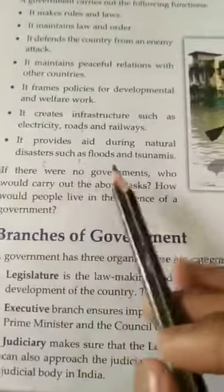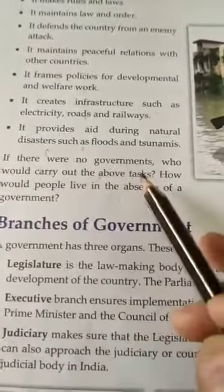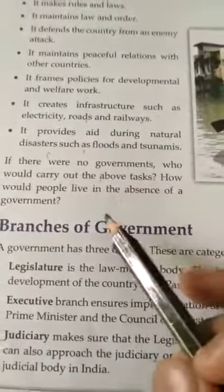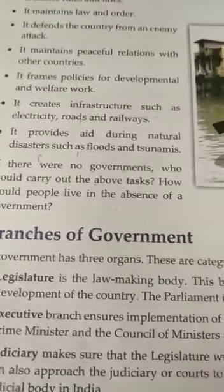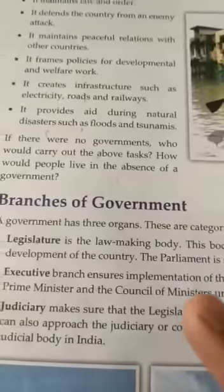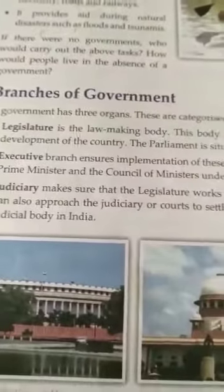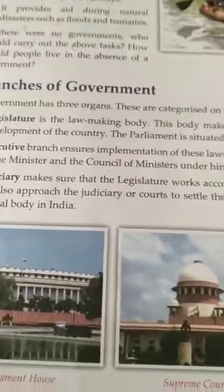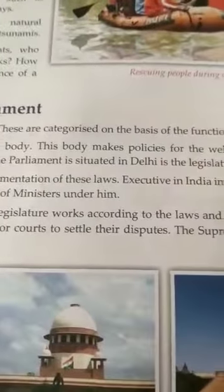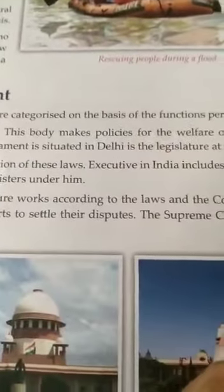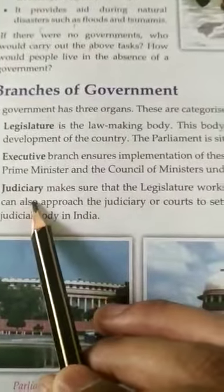If there were no government, who would carry out the above tasks? How would people live in the absence of a government? Next we talk about branches of government. A government has three organs, categorized on the basis of the functions performed by them: first is legislature, second is executive, and third is judicial.